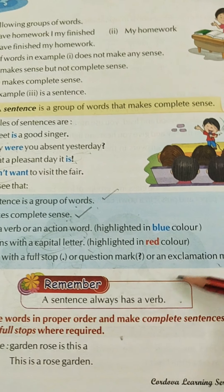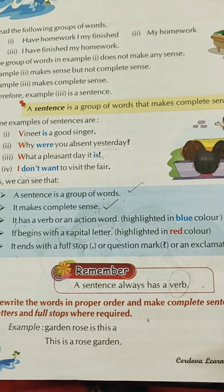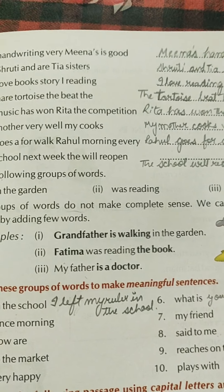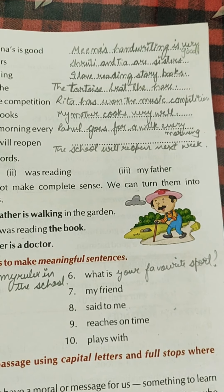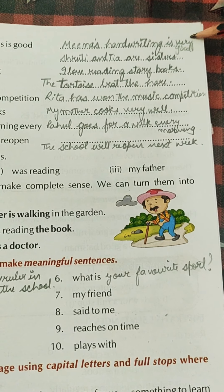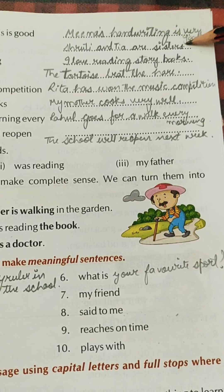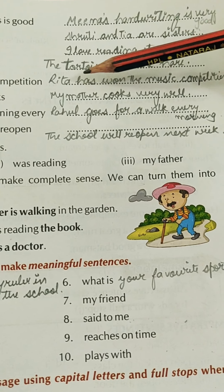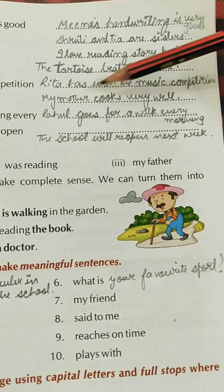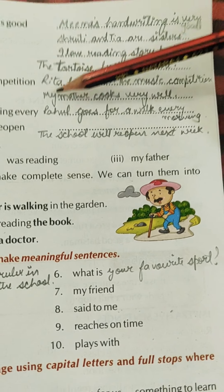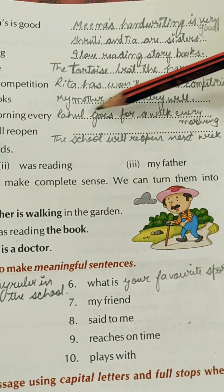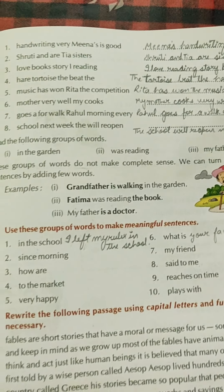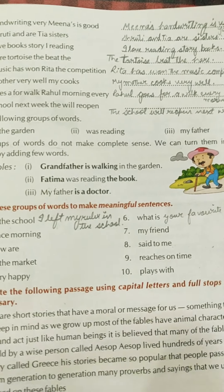Now, rewrite the words in proper order and make complete sentences, putting capital letters and full stops where required. These are jumbled sentences that you have to put in proper order. The answers are: 'Meena's handwriting is very good,' 'Shruti and Tia are sisters,' 'I love reading storybooks,' 'The tortoise beat the hare,' 'Rita has won the music competition,' 'My mother cooks very well,' 'Rahul goes for a walk every morning,' and 'The school will reopen next week.' Please try to do it yourself first before referring to the answers.